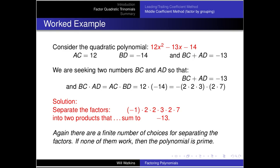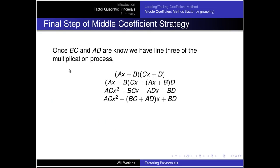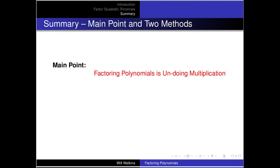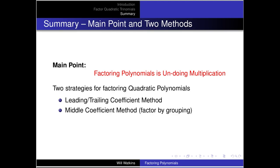We search through the possibilities to make bc + ad = −13. There are a finite number of choices for separating the factors, and if none of them work, the polynomial is prime. Once we know ad and bc, we can factor by grouping to find the final result. Factoring polynomials is undoing multiplication.